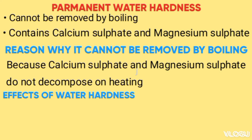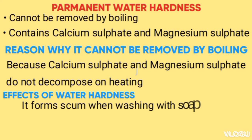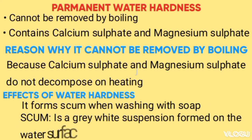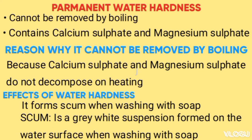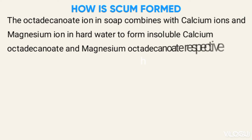Soap effect of water hardness: it forms scum when washing with soap. Scum is a grey-white suspension formed on the water surface when washing with soap. Scum is formed when the octadecanoate ion in soap combines with calcium ions or magnesium ions to form insoluble calcium octadecanoate or magnesium octadecanoate respectively.